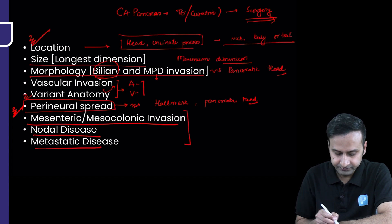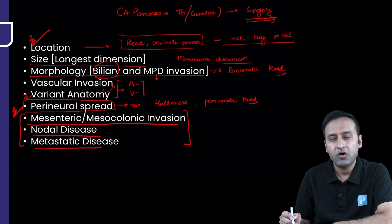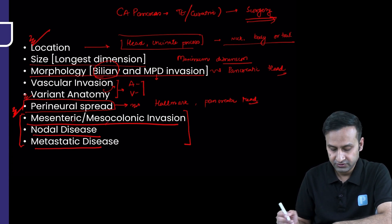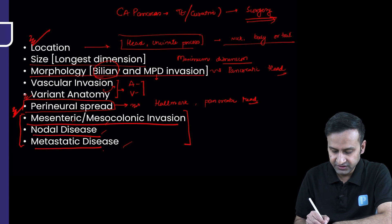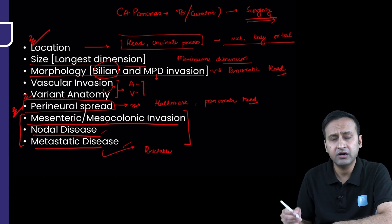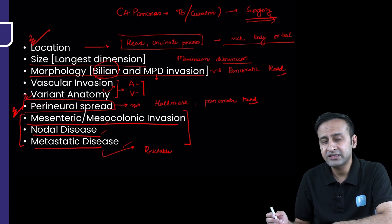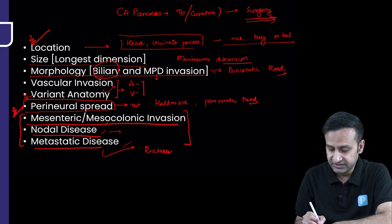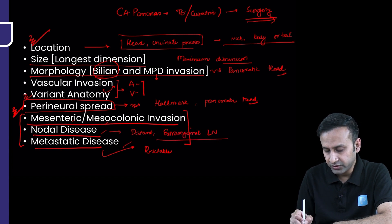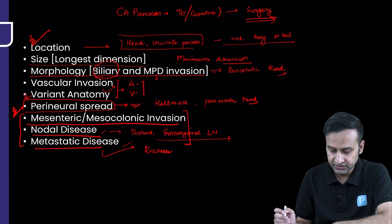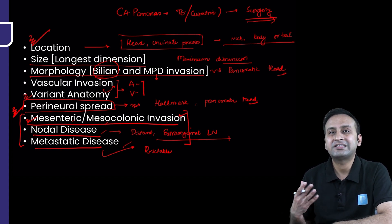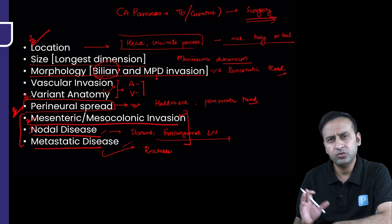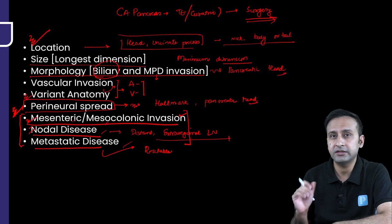Finally, three things that make the radiologist's work important but the patient's situation worse: mesenteric or mesocolonic invasion, nodal disease, and metastatic disease. Metastatic disease — even a single metastasis in liver, lung, or peritoneum — makes the case unresectable. For nodal disease, extra-regional lymph node involvement also means irresectable disease. Mesocolonic invasion is not a clear-cut contraindication to surgery but may require more extensive surgery such as hemicolectomy. We'll discuss how to report and identify all of these.